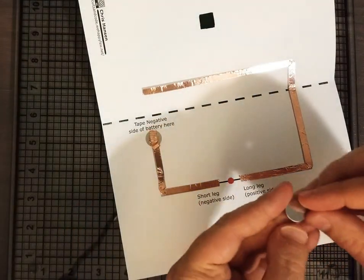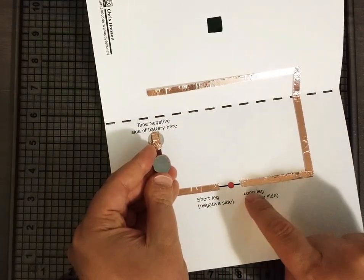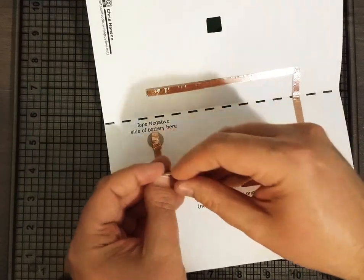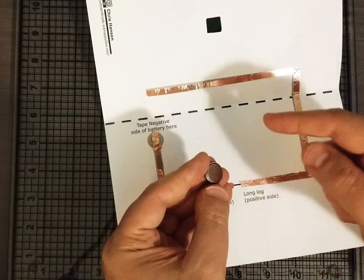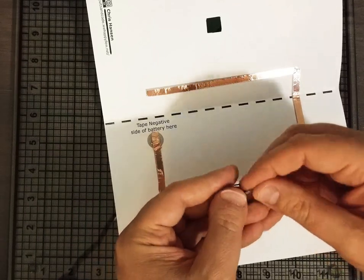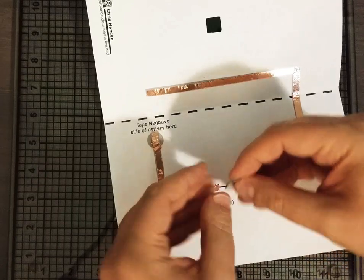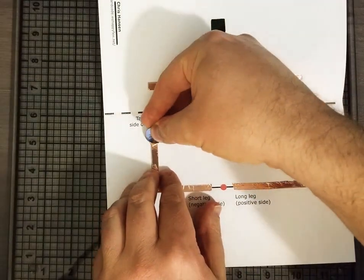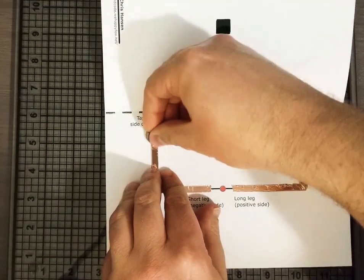And then we want to make sure that the positive side is facing up. That's the way that we have the legs of the LED configured. So we're going to take the negative side of the battery—that's the textured side, it's not marked usually with a negative sign, the top is marked with a positive—the negative side is just textured. We're going to apply that right on top of our fold so it'll be stuck to the card.